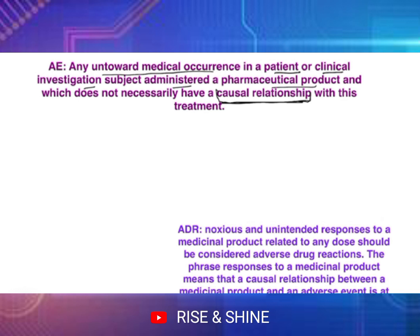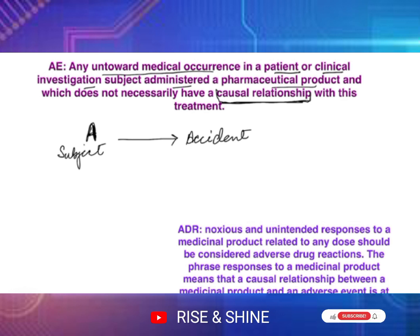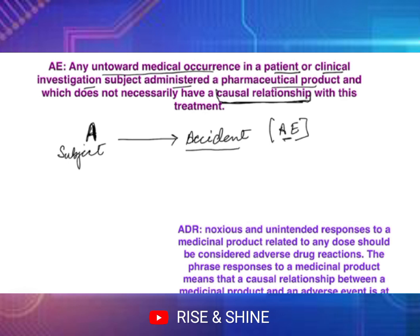Let's understand by example. Suppose there is a person — in clinical trials we don't use names, so we say Subject A — who participated in a clinical trial. Suddenly that person met with an accident, maybe with small scratches or something more significant. Irrespective of whether it is related to the drug or not, this will be considered an adverse event. The person had taken a new medication, and the same evening or some other day they met with an accident — this is an adverse event, without determining if it is drug-related.